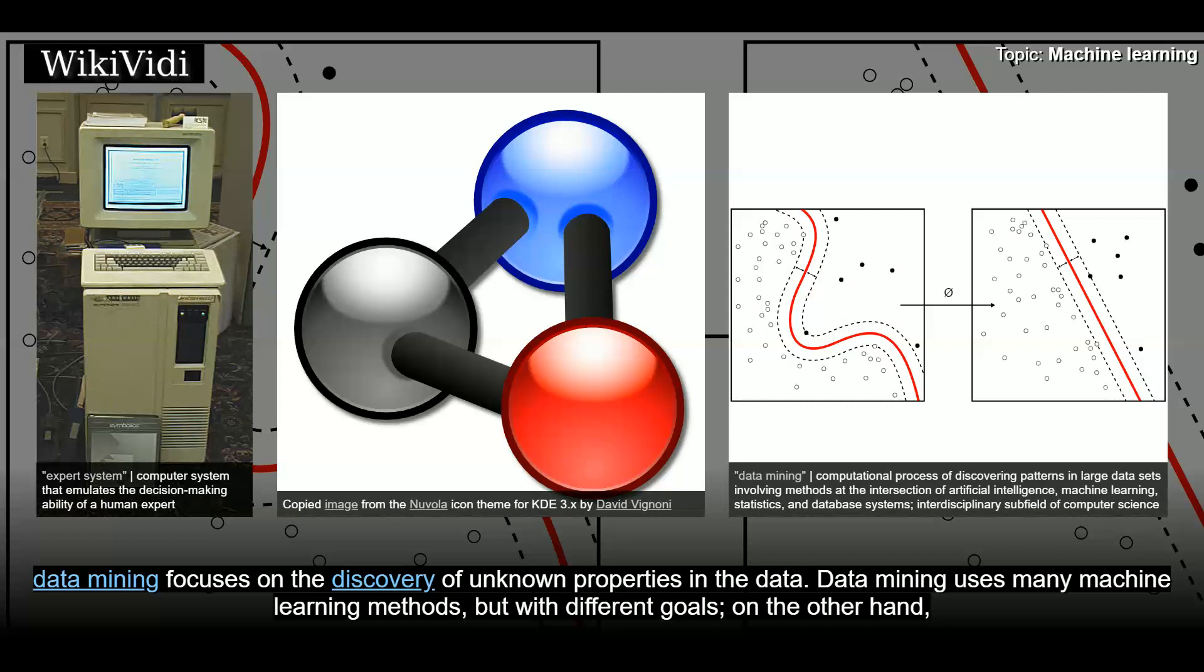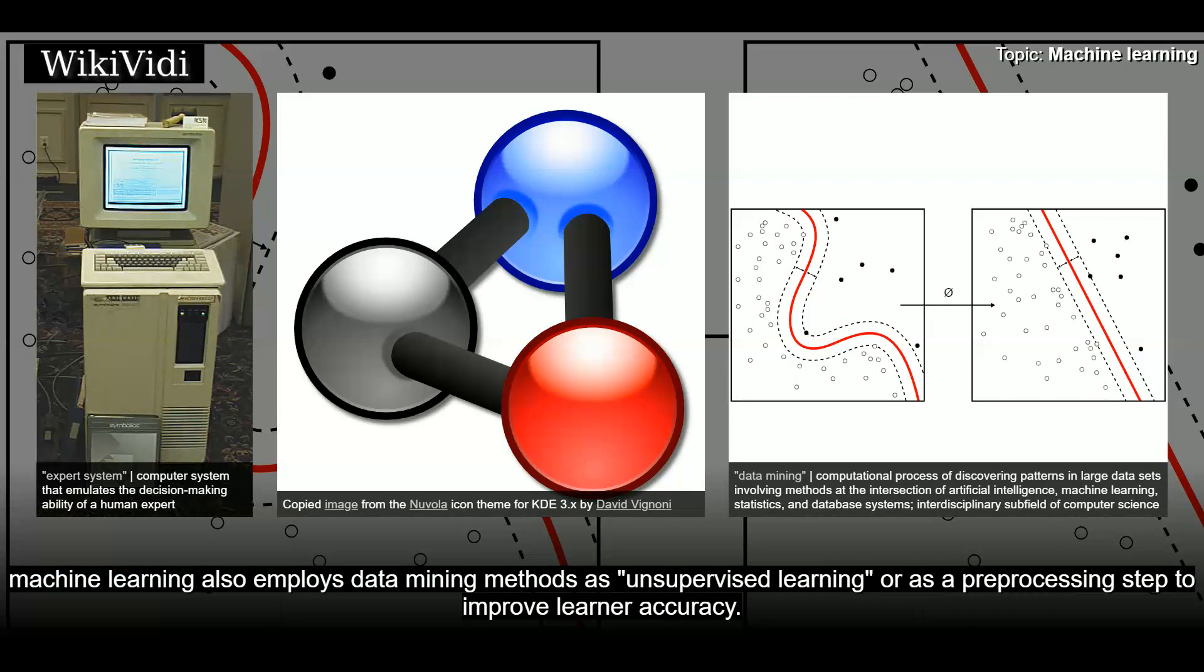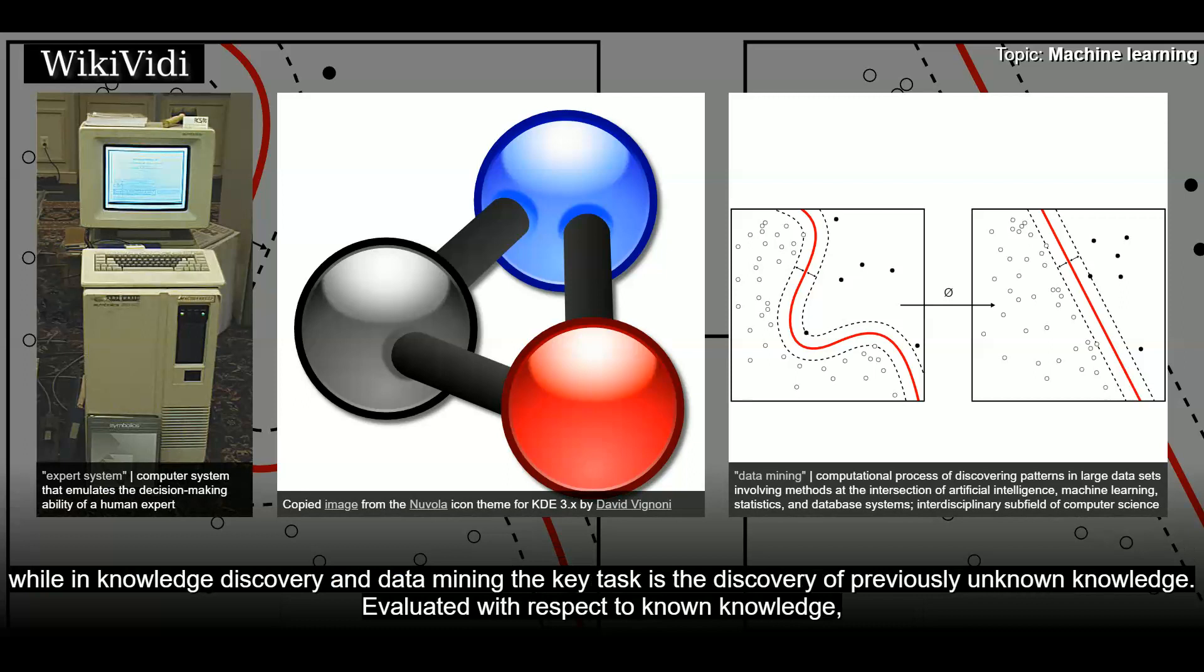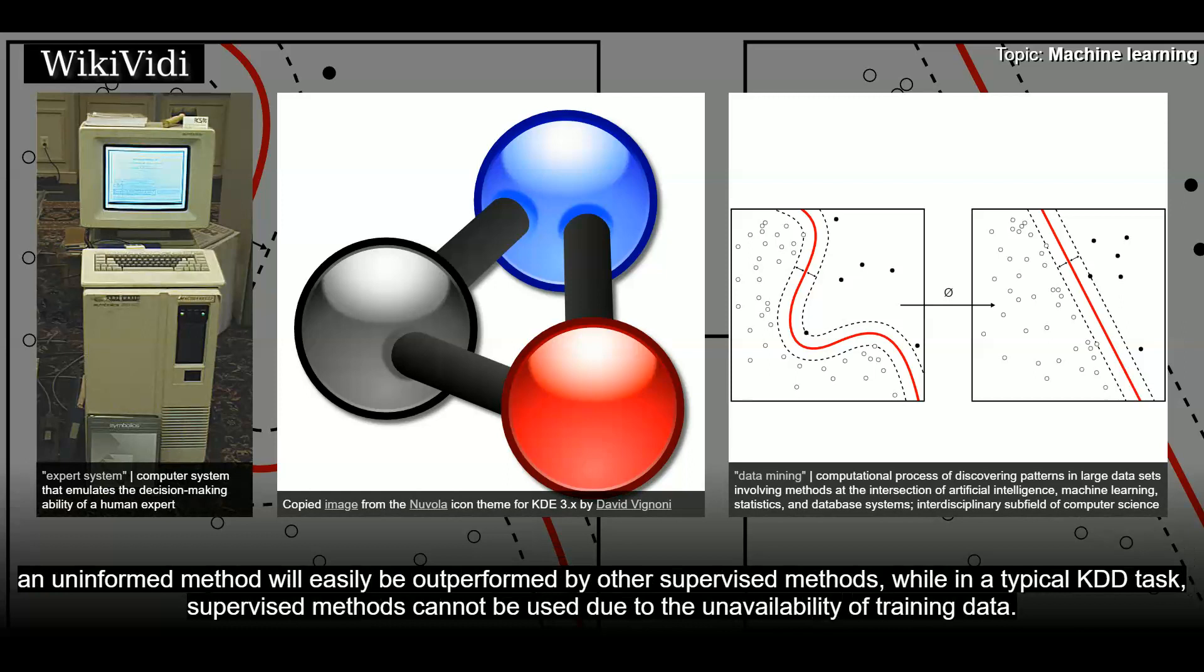Data mining uses many machine learning methods, but with different goals. On the other hand, machine learning also employs data mining methods as unsupervised learning, or as a pre-processing step to improve learner accuracy. Much of the confusion between these two research communities comes from the basic assumptions they work with. In machine learning, performance is usually evaluated with respect to the ability to reproduce known knowledge. While in knowledge discovery and data mining the key task is the discovery of previously unknown knowledge, evaluated with respect to known knowledge. An uninformed method will easily be outperformed by other supervised methods. While in a typical KDD task, supervised methods cannot be used due to the unavailability of training data.